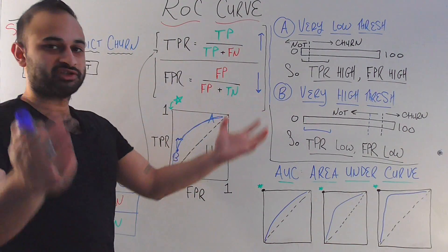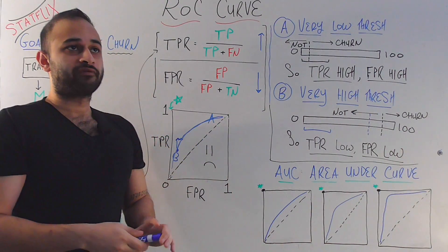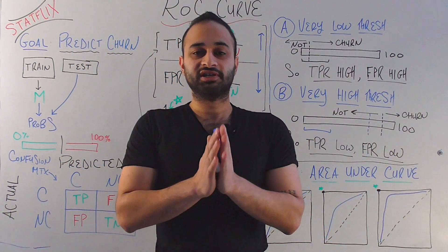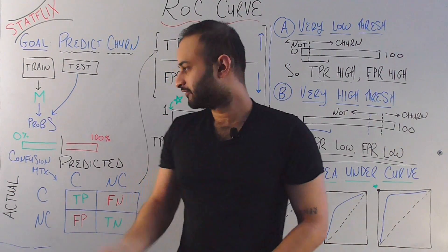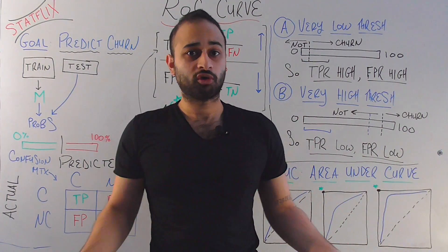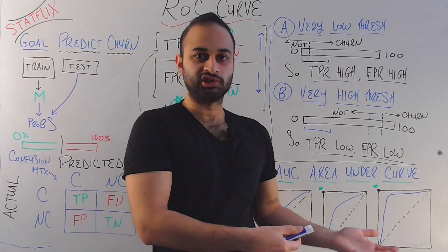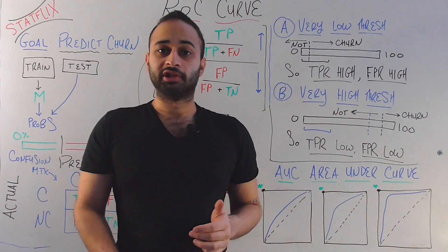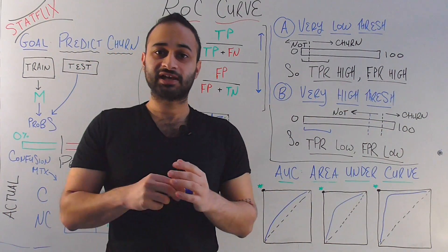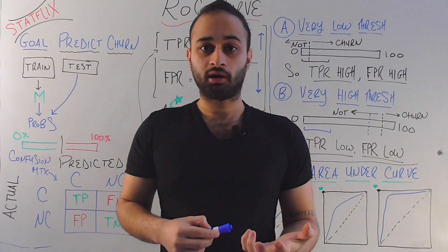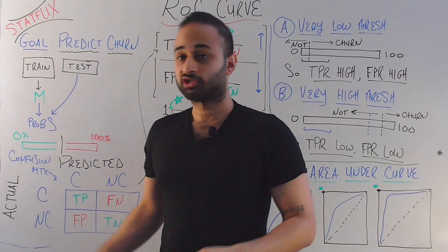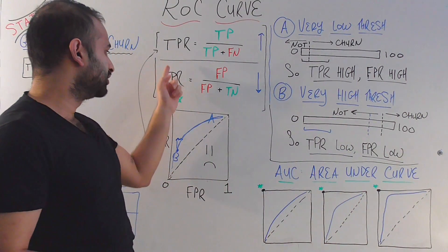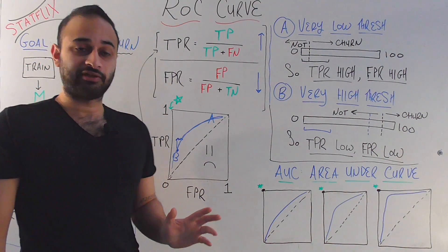To tie everything together: the ROC curve assumes your model outputs probabilities, and you as the data scientist need to set a threshold. Above that threshold you take one action, below it another. That threshold depends on your business scenario — how many resources you have and how desperate you are to retain customers. The ROC curve graphs the trade-off between TPR and FPR as you vary that threshold from 0 to 100%. For each threshold you construct a confusion matrix, compute TPR and FPR, plot those values, and connecting all those dots gives you your ROC curve.